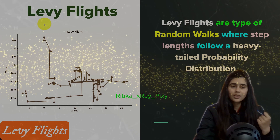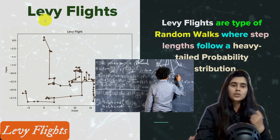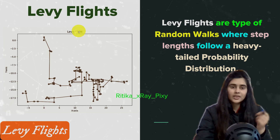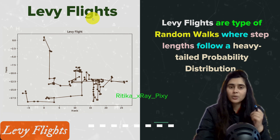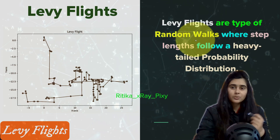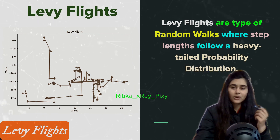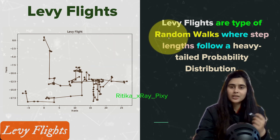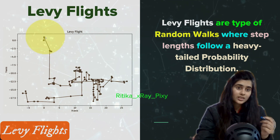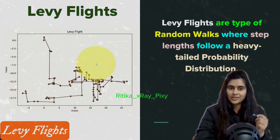First we will start with what is Levy flights. We have two terms: 'Levy' and 'flights.' The Levy term is originated from the name of a French mathematician who first studied Levy motions. 'Flights' means the maximum straight line distance between two points that an object can cover. Levy flights are a type of random walk where step length follows a heavy-tailed probability distribution. In simple words, Levy flight is a random walk whose step size is derived from Levy's distribution.